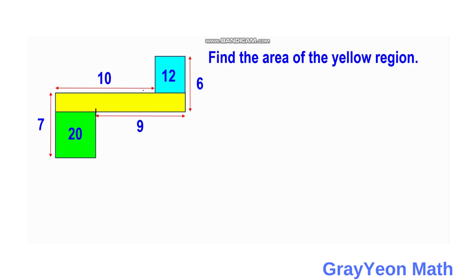First, we label the lengths. Since we have a distance in between the lengths of the green and the blue rectangle within the yellow, we call this distance x. And since this total dimension is 10, the length of the green should be 10 minus x, and the length of the blue should be 9 minus x. Since the total height of the blue plus yellow is 6, we label that height as y, so the blue height will be 6 minus y.